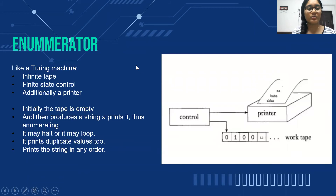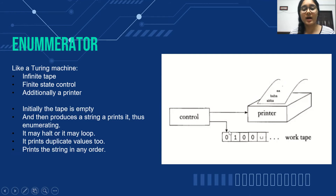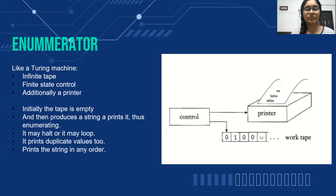Moving on to the first application: the enumerator. It is a machine which inherits some properties from the Turing machine — for example, it consists of an infinite tape and has finite state control. By infinite tape, we mean there are two infinite tapes: firstly the control alphabet tape, and secondly the printer alphabet tape. There is also a work tape, which is initially empty and then produces a string which is printed by the printer. This enumerator machine can also consist of duplicate values and can print strings in any order. Since this enumerator inherits properties from the Turing machine, we can say it is an application of the Turing machine.